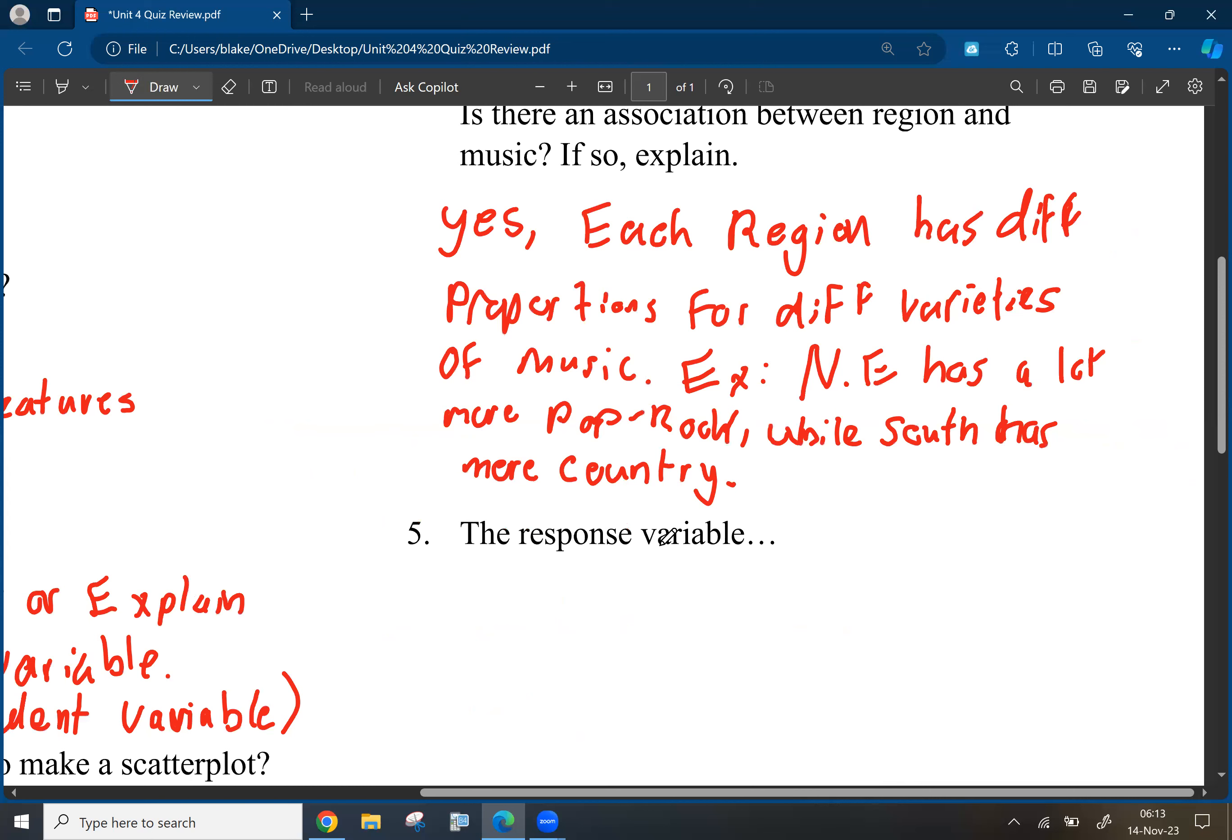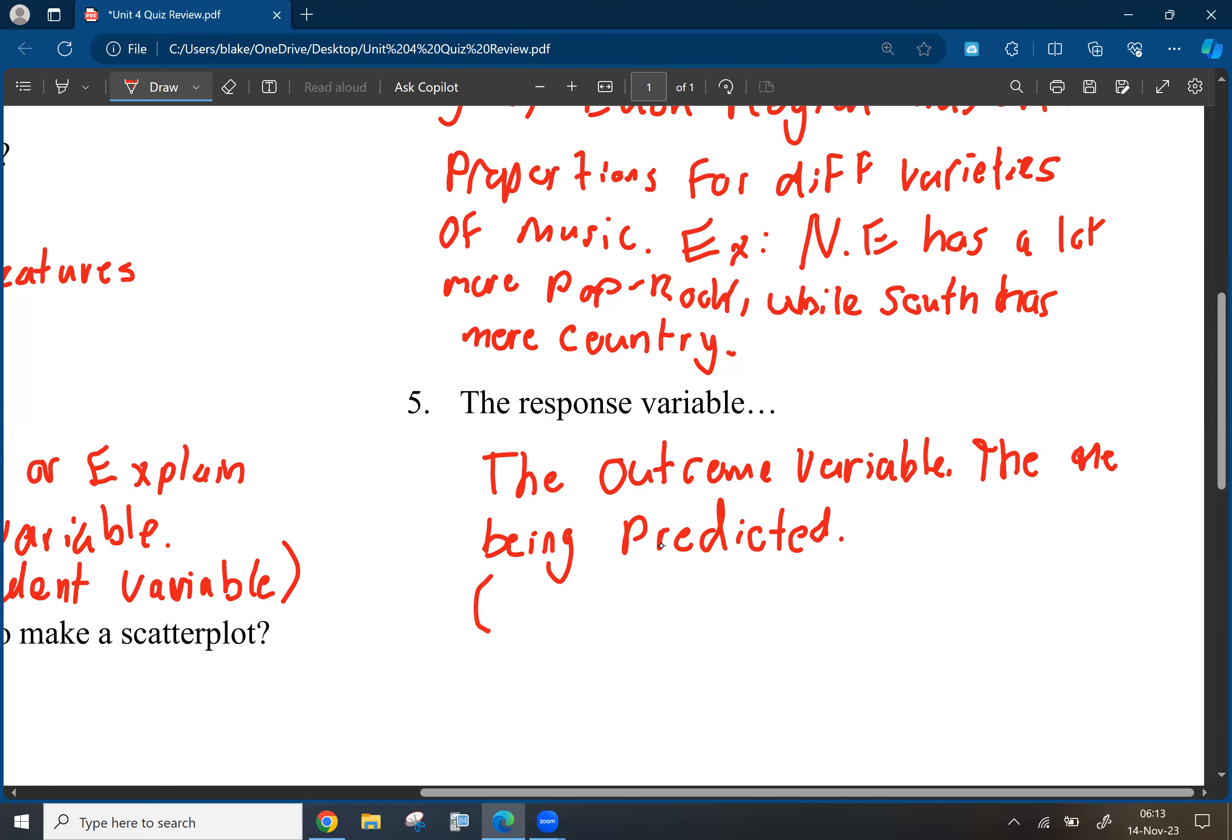All right, whereas, of course, the response variable is the outcome, and it's the variable that is being predicted. It's the outcome variable. And it is also known as, like we said, the output slash dependent variable.